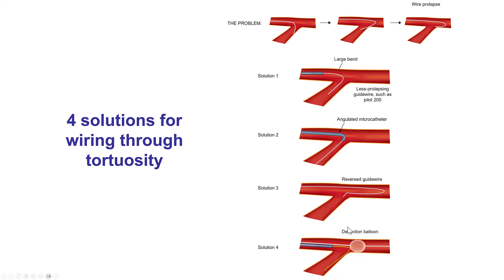These are some of the solutions for wiring through tortuosity. One is to use various guidewires with different bends. Another is to use an angulated microcatheter like the Supercross. Another is to use the reversed guidewire technique, which we will discuss more for this case. And solution number four is to use a deflection balloon to prevent the wire from going down the vessel and taking the tight bend into the angulated segment.